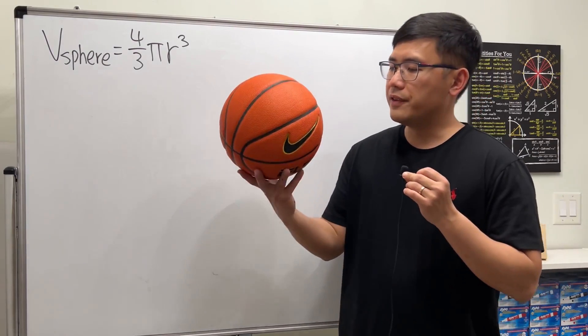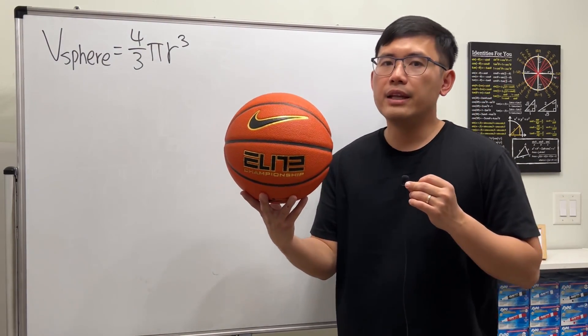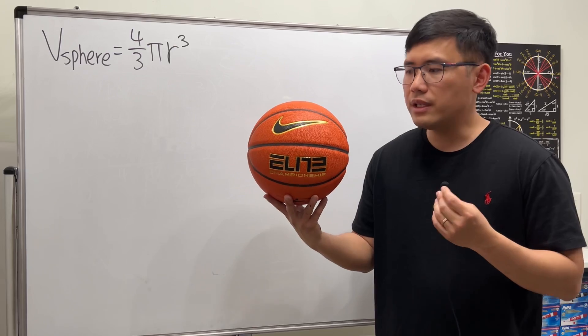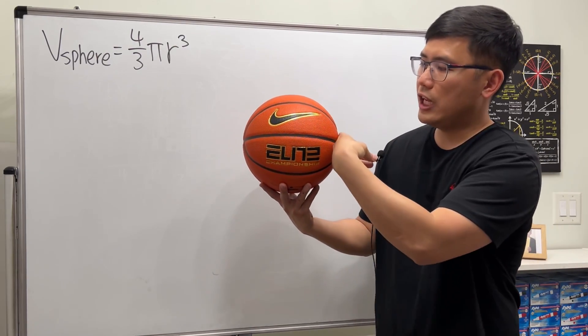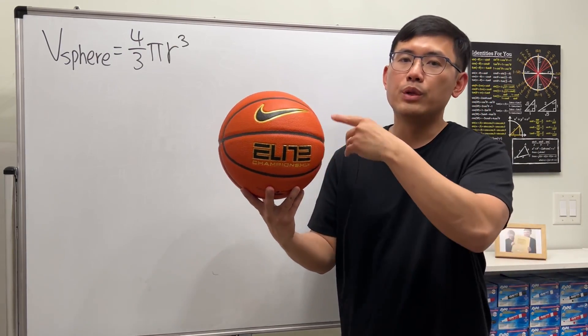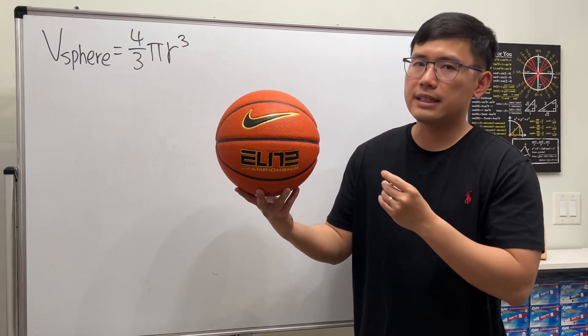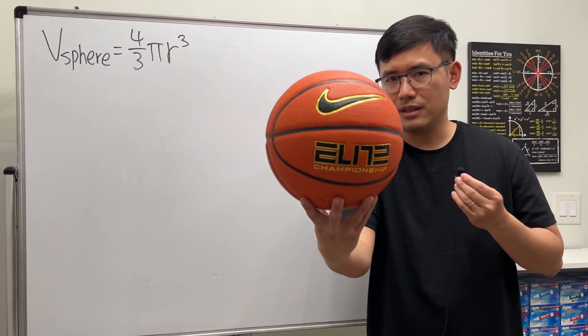So first, a sphere is just like a basketball. And to do the volume of revolution, we will have to have this shape, which is just a semicircle. And then we do a rotation, let's say about the x-axis, and then we can get a sphere.